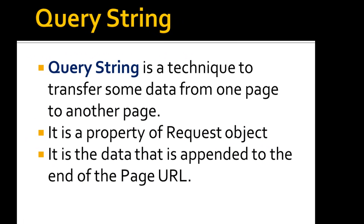Query String is a technique to transfer some data from one page to another page, and it is a property of the request object. When you use a Query String, the data will be appended to the end of the page URL, so you can easily see the data in the URL of your page.